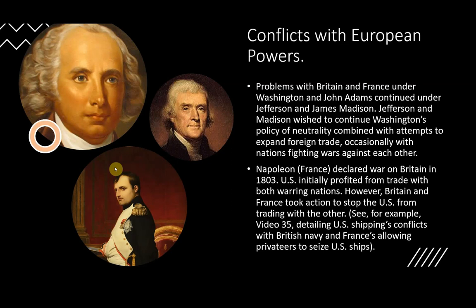After Napoleon, who was leading France at the time, declared war on Britain in 1803, the U.S. initially profited from trade with both warring nations. However, Britain and France both took action to stop the U.S. from trading with the other. See, for example, video 35 in this series, which details U.S. shipping's conflicts with the British Navy and France's allowing privateers — that is, pirates — to seize U.S. ships.